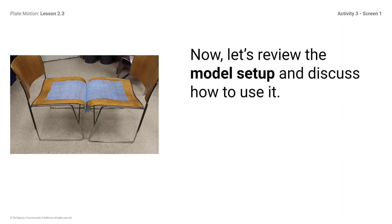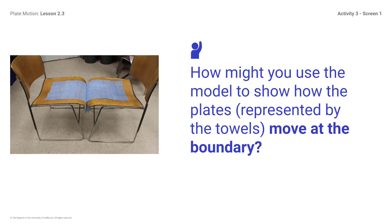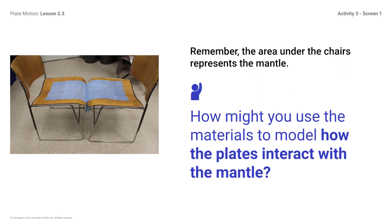Let's review the model setup and discuss how to use it. Unfold two towels and place one on the seat of each chair, on either side of the small gap between the chairs that represents the plate boundary. How might you use the model to show how the plates, represented by the towels, move at the boundary? Remember, the area under the chairs represents the mantle. How might you use the materials to model how the plates interact with the mantle? Try to figure out how to best represent plate-mantle interactions using these materials.